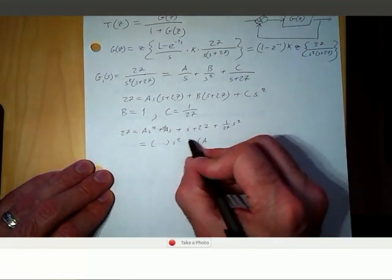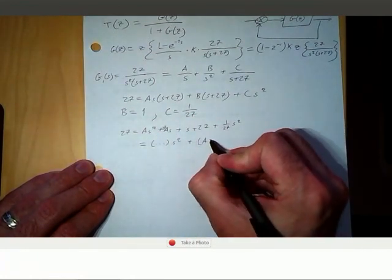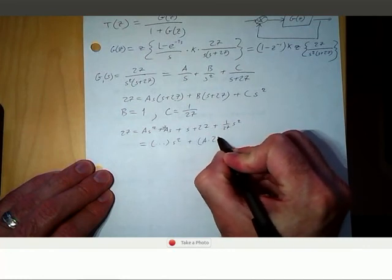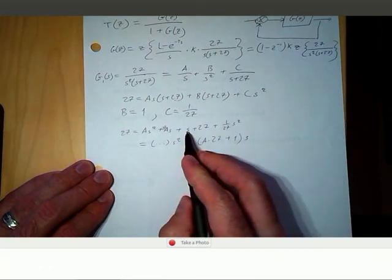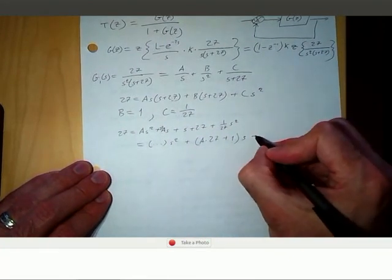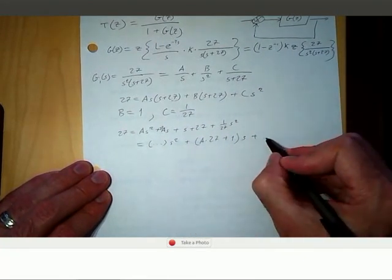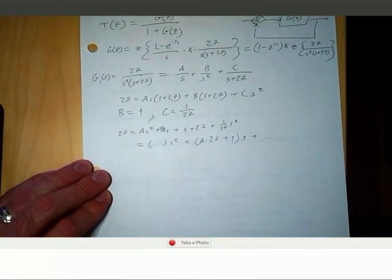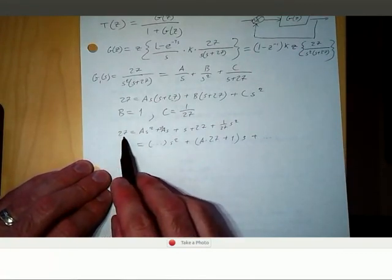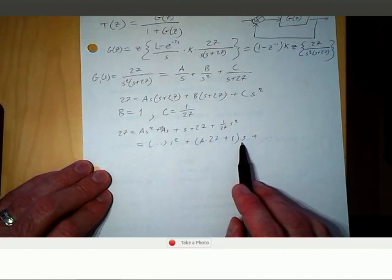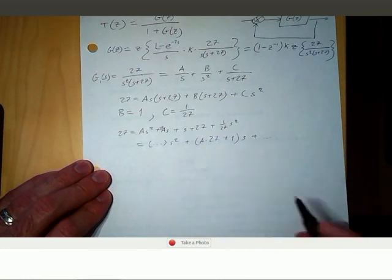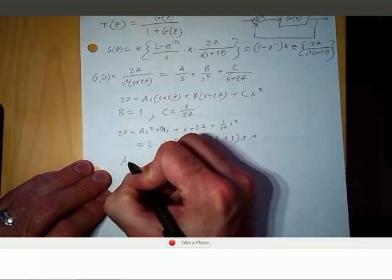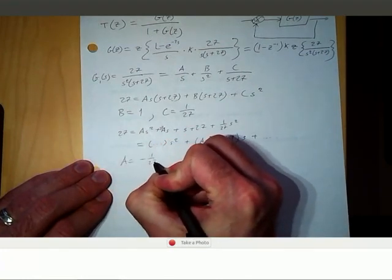Grouping the s terms: we get a times 27 plus 1 times s. The coefficient for the s terms on the left side is 0, so 27 times a plus 1 equals 0, giving us a equals negative 1 over 27.